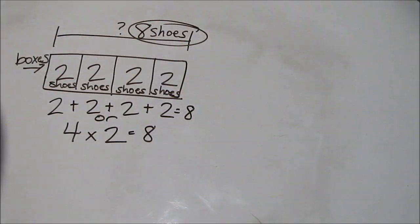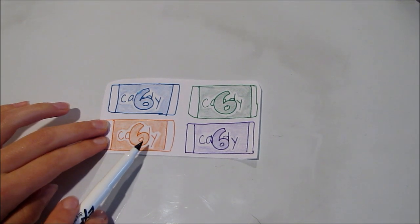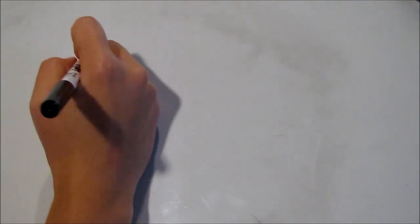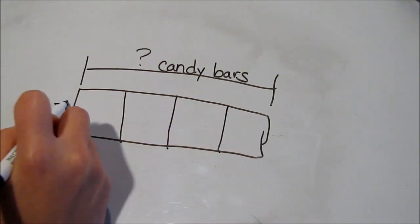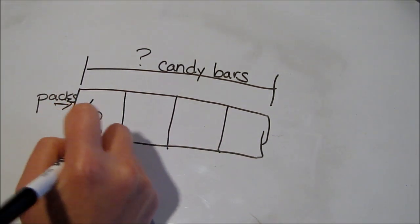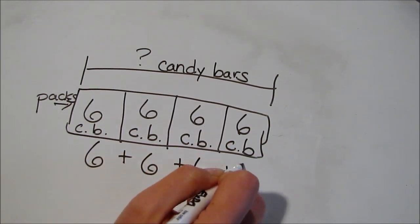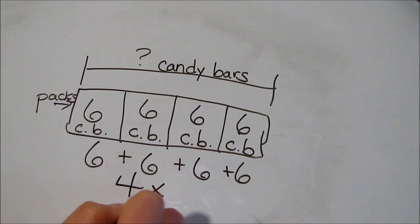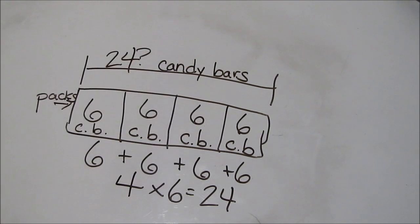Either way, we'll find out that George has eight shoes. Let's look at another combining problem. If Katie has four mini candy bar packs, and each pack has six candy bars, we can figure out how many candy bars she has. Remember, we're not combining packs and candy bars, we're just finding candy bars. The candy bars are in four packs, and each pack has six candy bars. Remember that our total bar will be as long as the parts strip. Now we can add six plus six plus six plus six, or, because we have equal groups, we can multiply four times six. Both give us an answer of 24 candy bars.